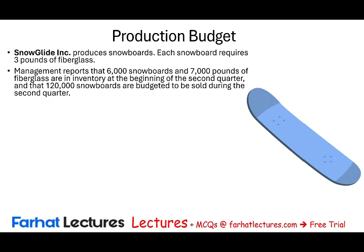First, we need to know the information that we are given. Management reports that 6,000 snowboards and 7,000 pounds of fiberglass are in inventory at the beginning of the second quarter. So we are dealing with the second quarter, and they already have 6,000 snowboards ready to sell and 7,000 pounds of fiberglass ready to use in production. And 120,000 snowboards are budgeted to be sold during the second quarter, based on forecast, estimation, and input from the sales team.